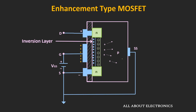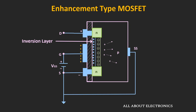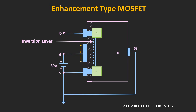This inversion layer will act as a channel between the drain and the source terminal. If we then apply voltage between drain and source, current can flow through this channel. The value of gate-to-source voltage at which this inversion layer is created is known as the threshold voltage. Below this threshold voltage there will be no current flow, and whenever Vgs is greater than the threshold voltage the width of the channel will increase.